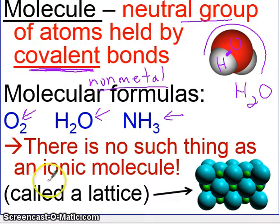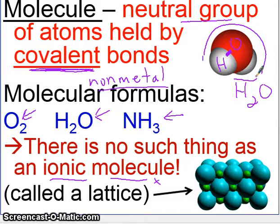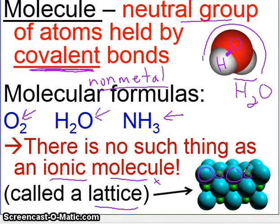With ionic bonding, you do not have a molecule — molecules do not exist with ionic bonding. You don't have a separate individual unit that you can single out. In ionic bonding, you have what's called a crystal lattice, which simply has alternating negative and positive ions. The negative ions are bigger and the positive ones are smaller.